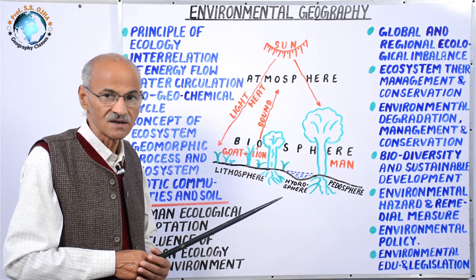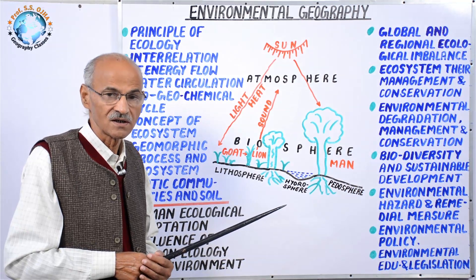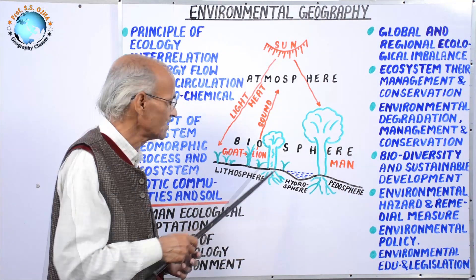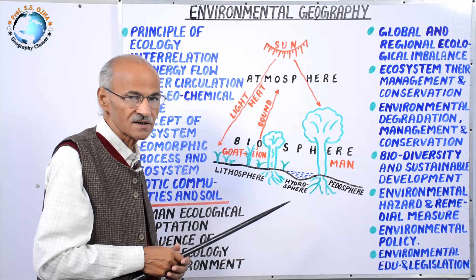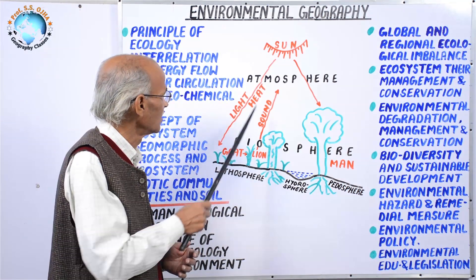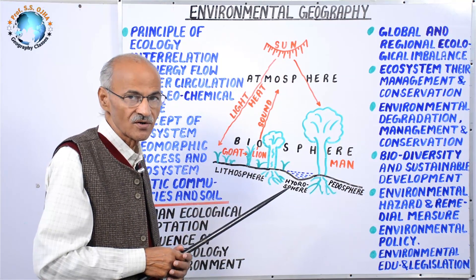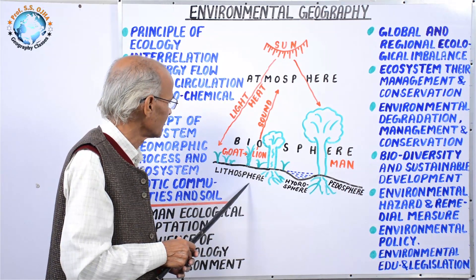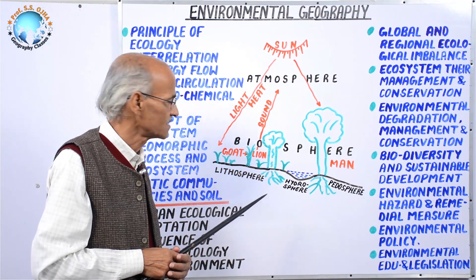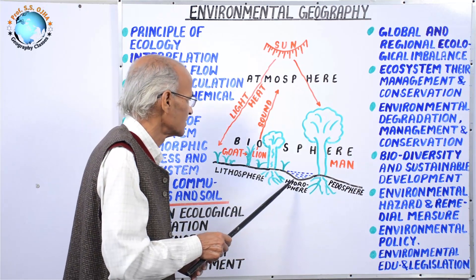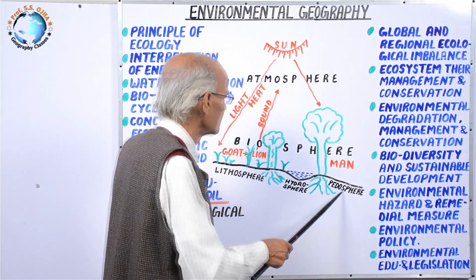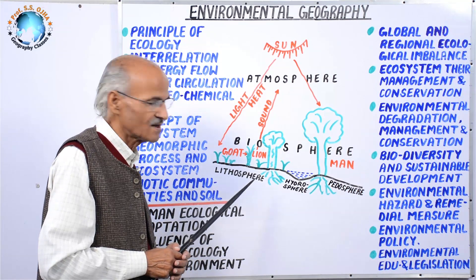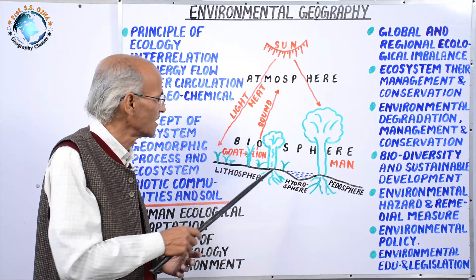What is environment? Suppose you are standing here — for you there are a number of surrounding environments. Number one is atmospheric environment, which directly affects us. Number two is lithospheric environment, which directly or indirectly affects us. Number three is hydrospheric environment. Number four is pedospheric environment. Number five is biospheric environment. These are the environments and have a number of components affecting you.